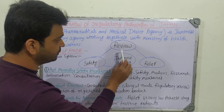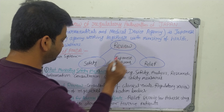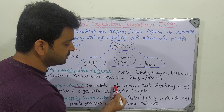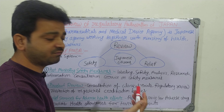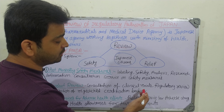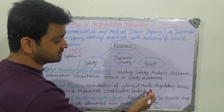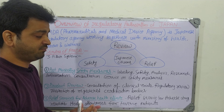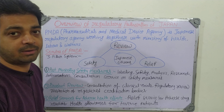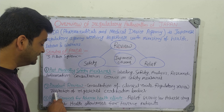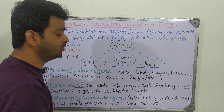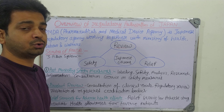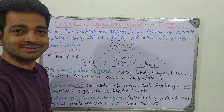The second pillar is product review. Product review means consultation of clinical trials — what is going to happen in phase one, phase two, phase three. This body provides consultation, guidelines, and regulatory review. Whatever regulatory proceedings and forms submitted for investigational neutral approval, it also handles inspection of registered certification bodies and organizations.